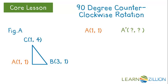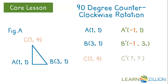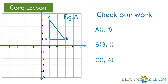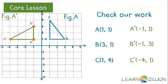Can we then now come up with coordinates without a graph? If a is 1, 1, a prime will be negative 1, 1. b is 3, 1, b prime will be negative 1, 3. c is 1, 4, c prime will be negative 4, 1. Checking our work on a graph, we'll plot each of the points, connect them, and we see that figure A prime is the image of figure A after a 90 degree counter-clockwise rotation.